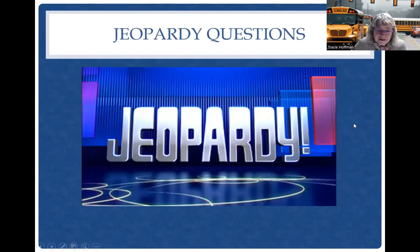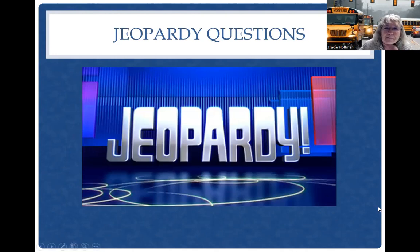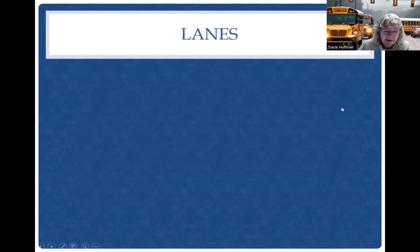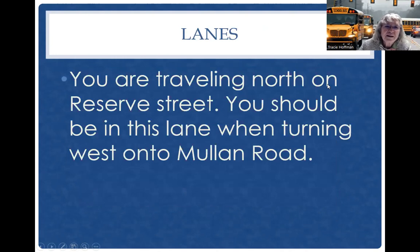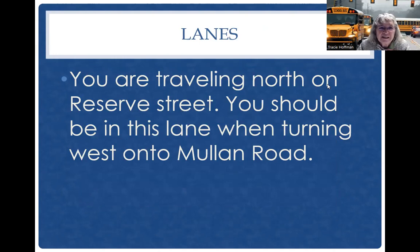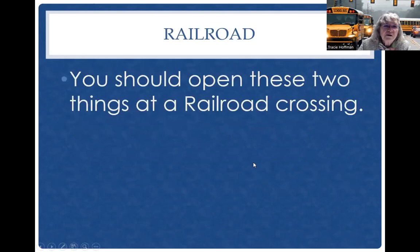Here are your test questions — pull out your summary sheet. First question is on lanes: You're traveling north on Reserve Street and turning west onto Mullen Road. There are two turn lanes — which lane should you be in, the inside left lane or the outside right lane? Next question on railroads: You should open these two things at a railroad crossing. Circle two answers, please.